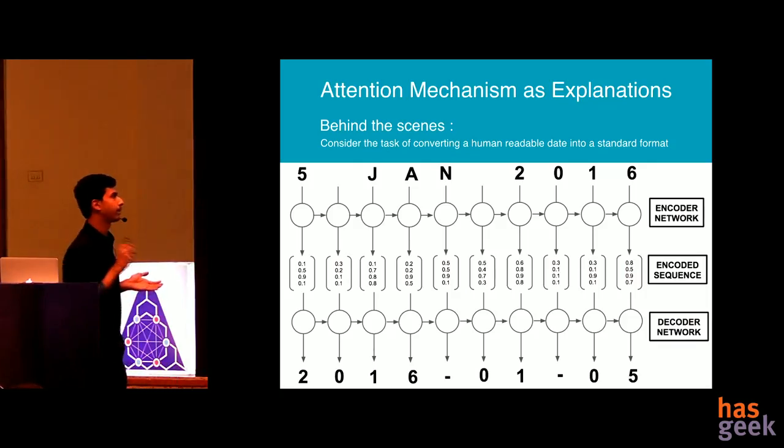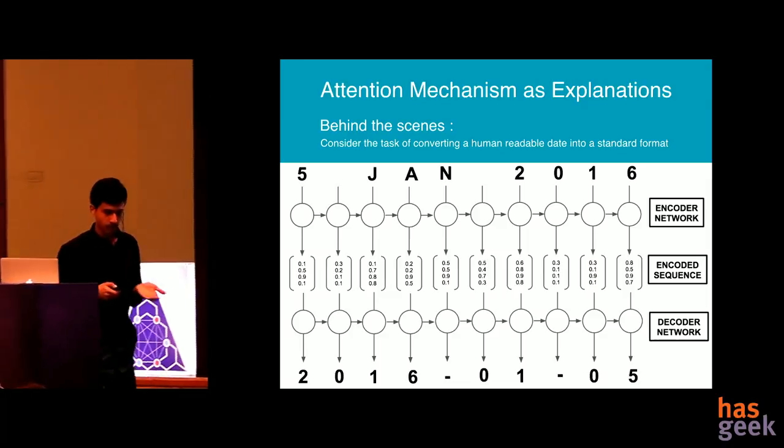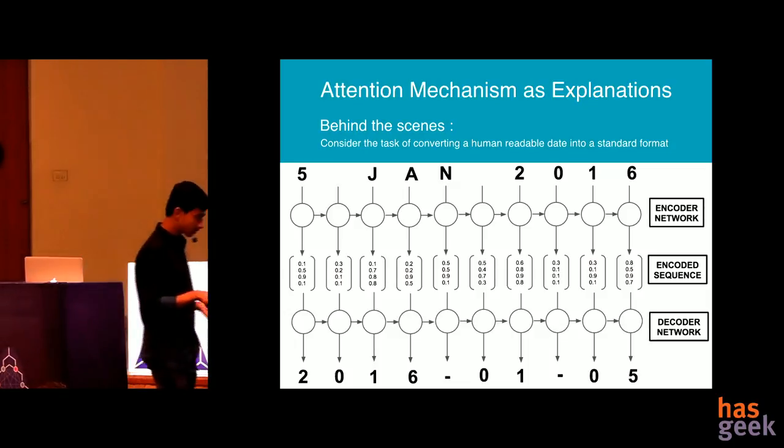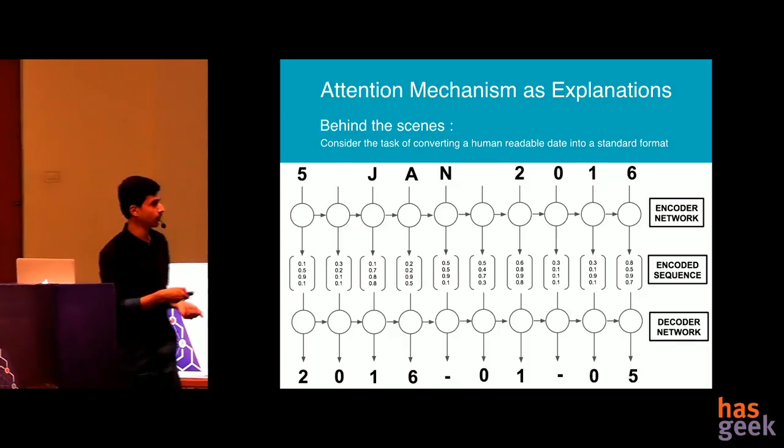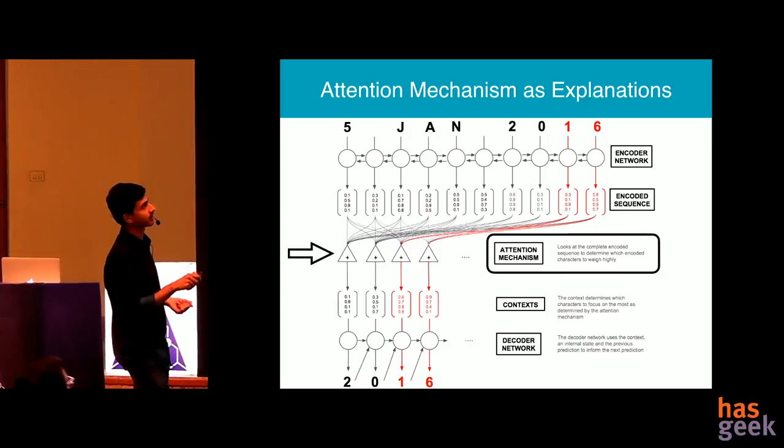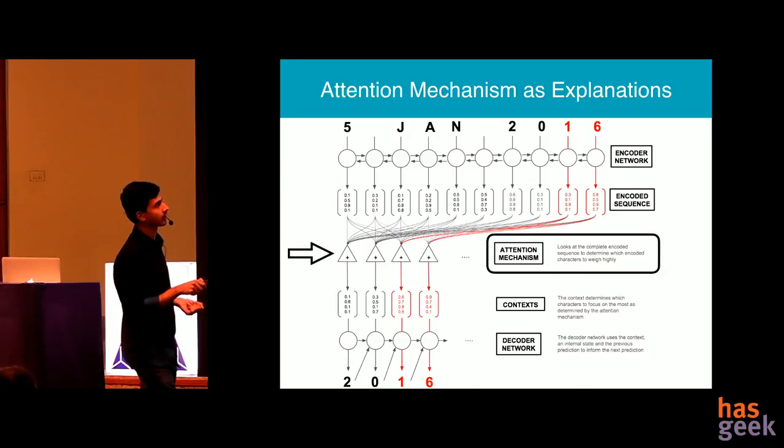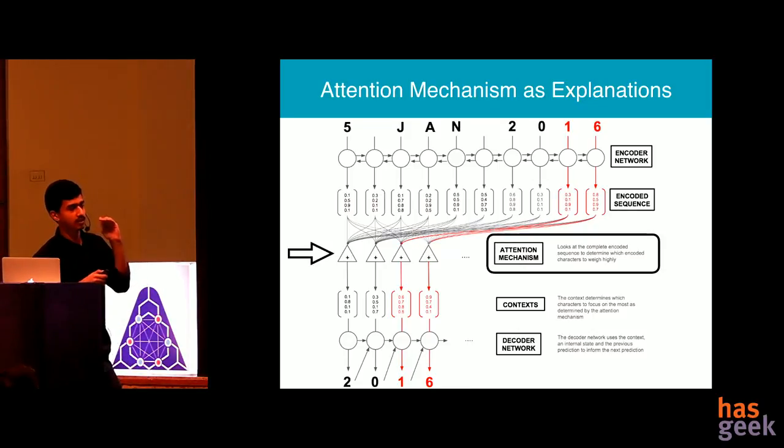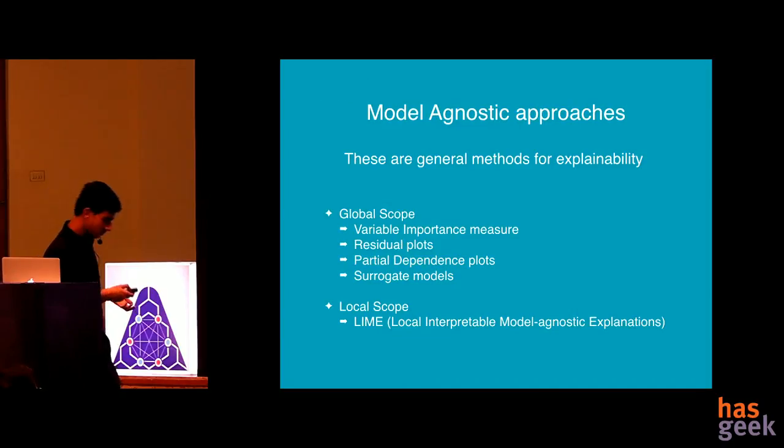Now what happens in attention model. Let's take an example where we're converting human readable dates into machine readable dates into a particular format. So you're converting five January or five Jan or shortened dates into proper format like year, month and day. You have an encoder decoder framework here. So you see to predict 2016 here, this 16 is getting maximum attention and it comes here. The encoder, the attention mechanism, what it does is it actually calculates the weighted average of wherever the network needs to look into maximally to get the particular output. So that is essentially attention model.